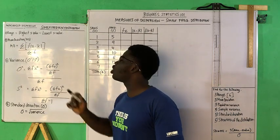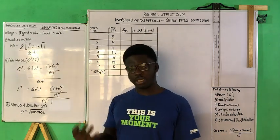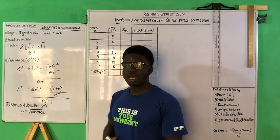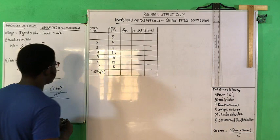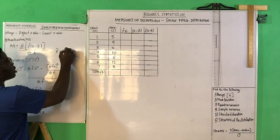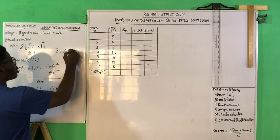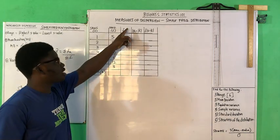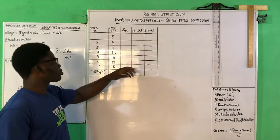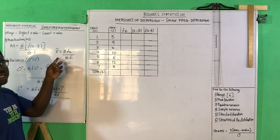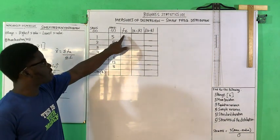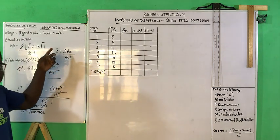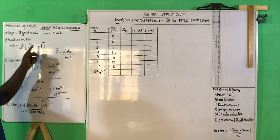From the formula of the mean deviation, you realize it is necessary for us to first obtain x-bar, which is the mean. The formula for x-bar, if you remember from measures of central tendency, is sigma fx divided by sigma f. That's why I've included this table here — this column gives us sigma f, the total frequency, whereas the third column gives us sigma fx. We use these two columns to derive our mean.